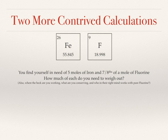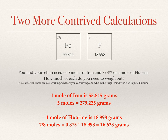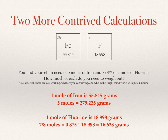Try these two contrived calculations — pause the video and come back when you have an answer. For iron we wanted five moles: one mole of iron is 55.845 grams, and five times that is 279.225 grams. For fluorine we want seven eighths of a mole — seven eighths is 0.875, and the molar mass of fluorine is 18.998. We multiply 18.998 × 0.875 to get 16.623 grams.